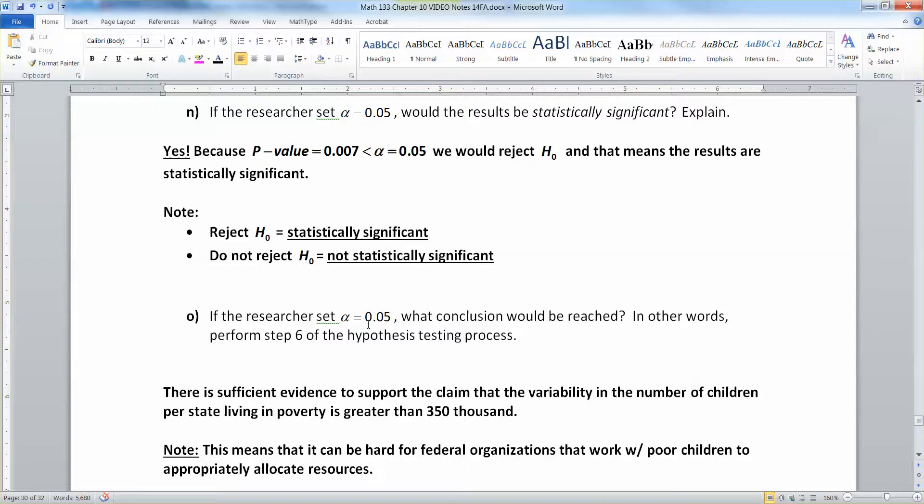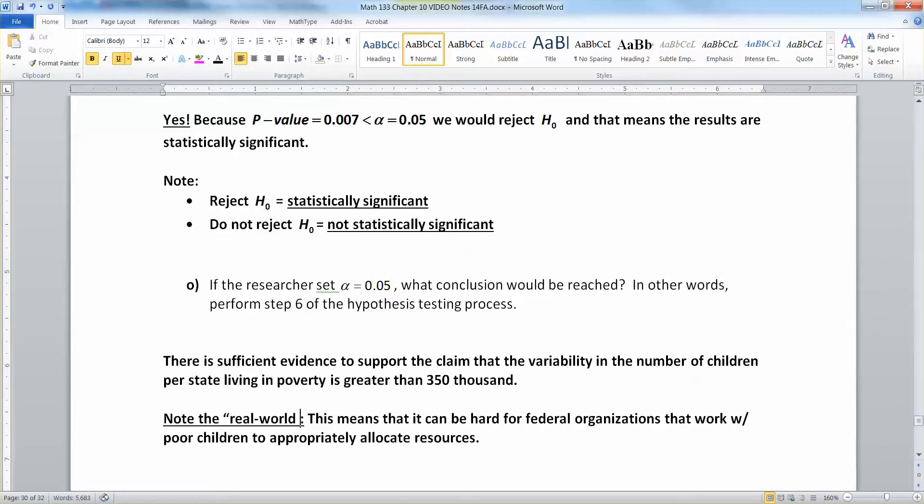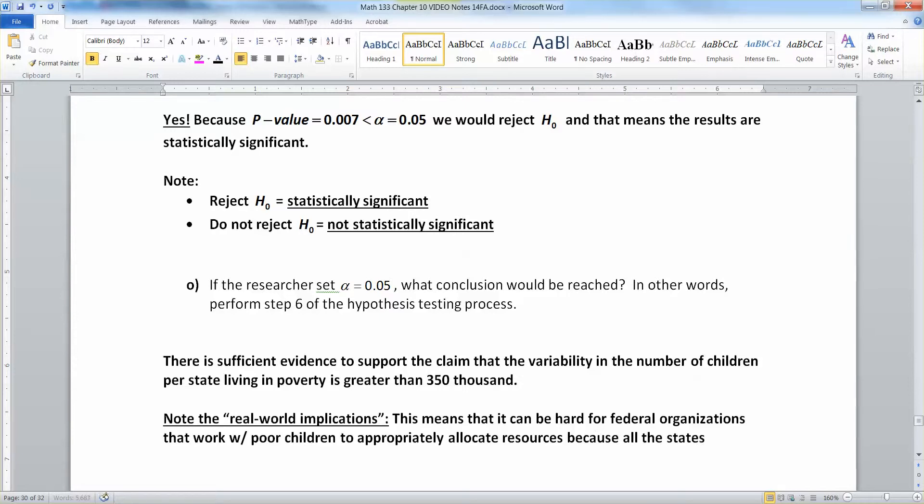Now, if the researchers set alpha to 0.05, what conclusion would be reached? In other words, perform step six. So there is sufficient evidence to support the claim that the variability in the number of children per state living in poverty is greater than 350,000. Now, realize the real-world implications of that. This is one which does have big practical significance implications. This would mean that it's very hard for federal organizations that work with poor children to appropriately allocate resources because all the states are so different from each other in terms of the number of children in poverty.